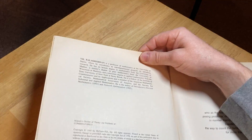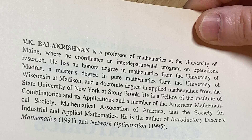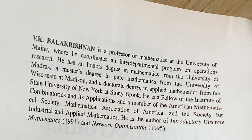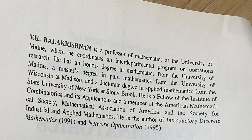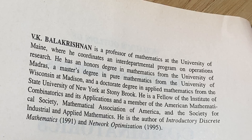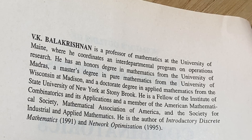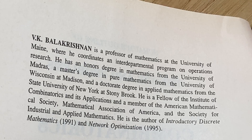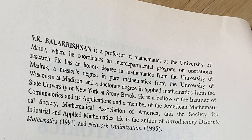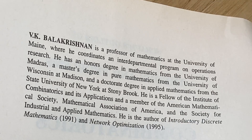Let's read about Balakrishnan. V.K. Balakrishnan is a professor of mathematics at the University of Maine, where he coordinates an interdepartmental program on operations research. He has an honors degree in mathematics from the University of Madras, a master's degree in pure mathematics from the University of Wisconsin at Madison, and a doctorate in applied mathematics from the State University of New York at Stony Brook. He is a fellow of the Institute of Combinatorics and its applications, and a member of the American Mathematical Society and the Mathematical Association of America. He's written other books: Introductory Discrete Math and Network Optimization.